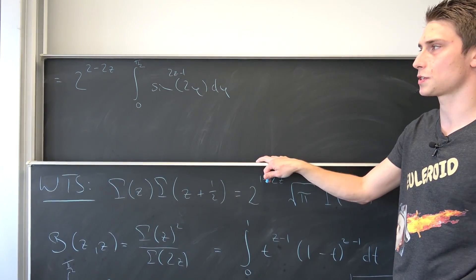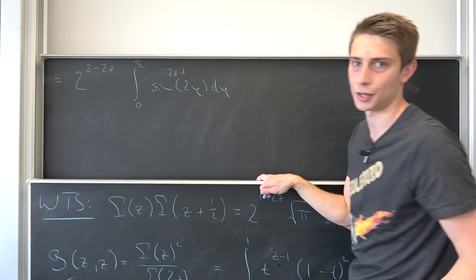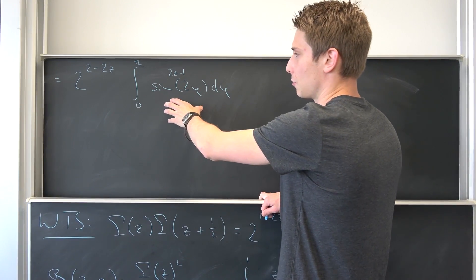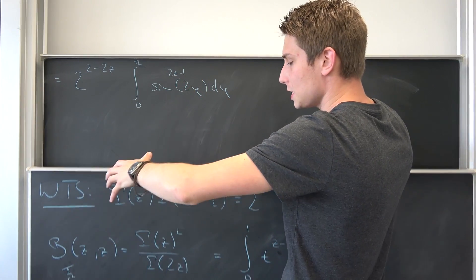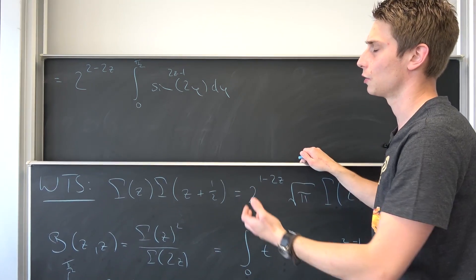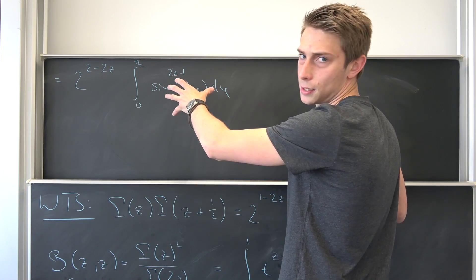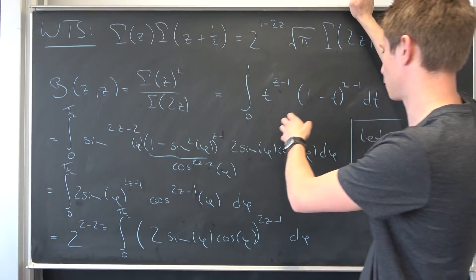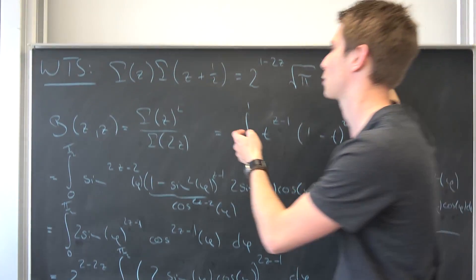Maybe that was a lot to take in, but it's not too hard. Now we can work with this even further. When using the beta function you have to do a lot of tricks. What I would like to do is make the argument inside just a regular argument — like phi instead of 2 phi, just like we have in the beta function.